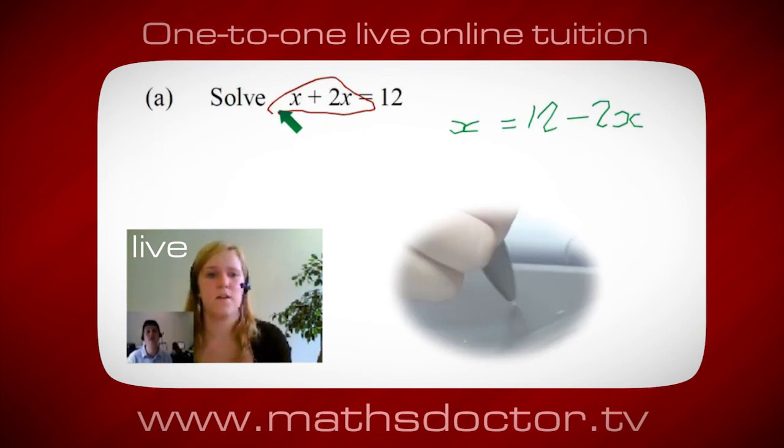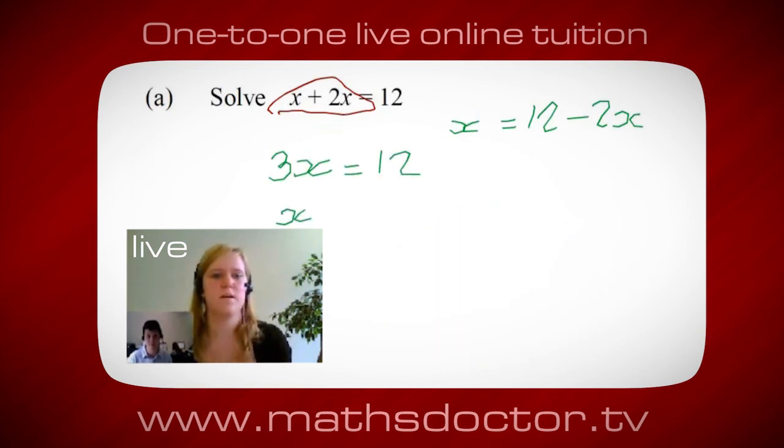Oh okay, it's 3x isn't it? Yeah, absolutely. So 3x equals 12. Oh, and so x equals 4. Brilliant, spot on, well done.